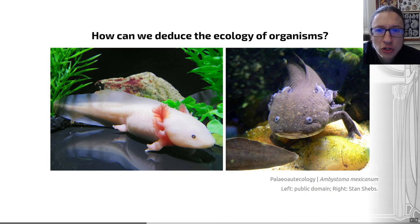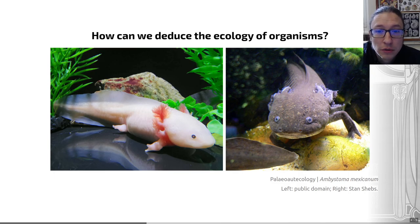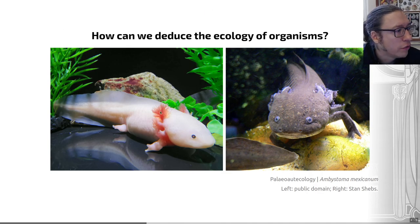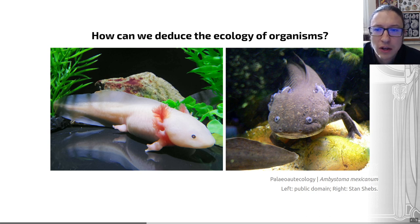Let's start by choosing a living example to show how we can combine lots of pointers to get a clearer idea of the mode of life of an animal. This living example on this slide here is a very handsome creature called an axolotl. It's an amphibian. You can see the juvenile form on the left-hand side and the adult form on the right-hand side.